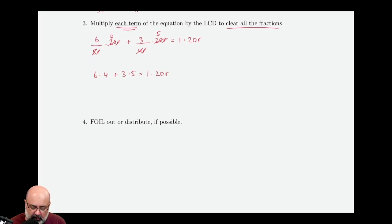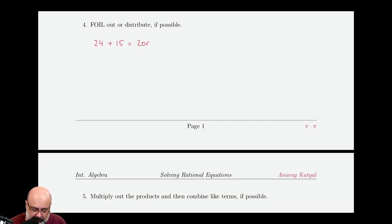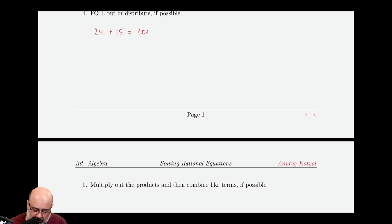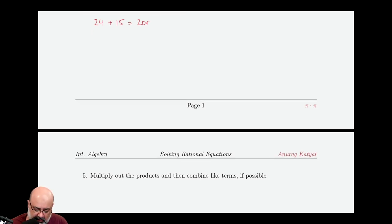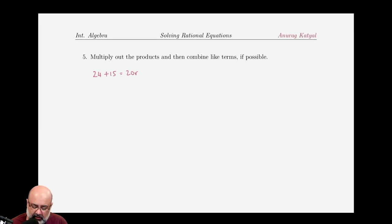So now it says to FOIL OUT or DISTRIBUTE if possible. There's not really anything to FOIL OUT, but we can multiply these guys together. So 6 times 4 is 24 plus 3 times 5 is 15 equals 1 times 20r is 20r. The next step is to multiply out the products and combine like terms. But we are asked to combine like terms, so we can combine 24 and 15, which gives us 39 equals 20r.